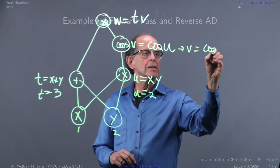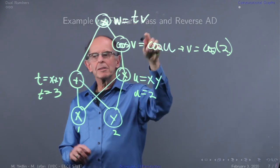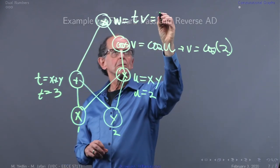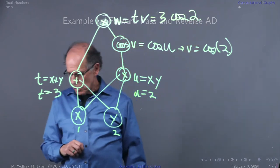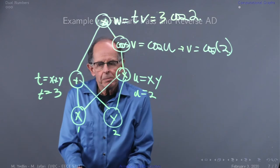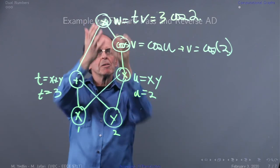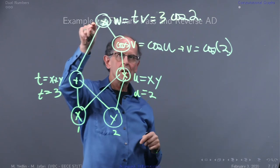That's fed in here, so v equals cosine of two. Now the product of t and v equals three cosine of two. That's what we mean by the forward pass—we're bubbling through our network to the end. You could think of these as input nodes and this is the cost function.